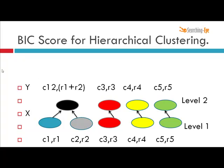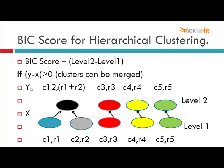At level two, say the BIC score is Y, and the clusters are represented as C12, C3, C4, C5 with r1+r2, r3, r4, and r5 data points respectively. If Y is greater than X, then we can merge those two clusters. This is the basic idea behind using the BIC score for hierarchical clustering.